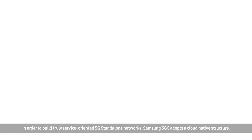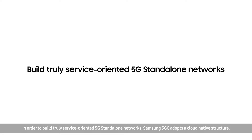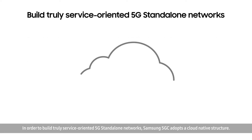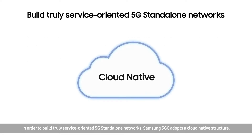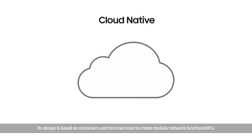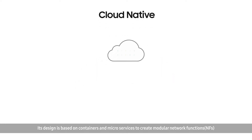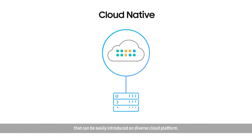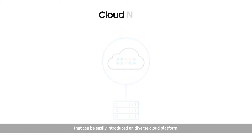In order to build truly service-oriented 5G standalone networks, Samsung 5G Core adopts a cloud-native structure. Its design is based on containers and microservices to create modular network functions that can be easily deployed on diverse cloud platforms.